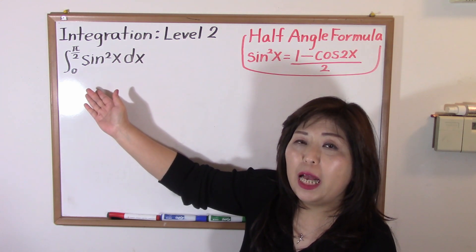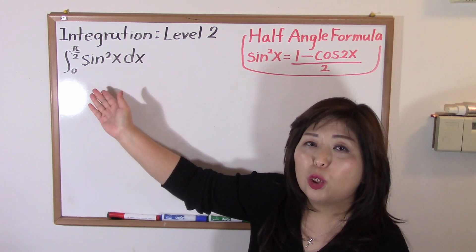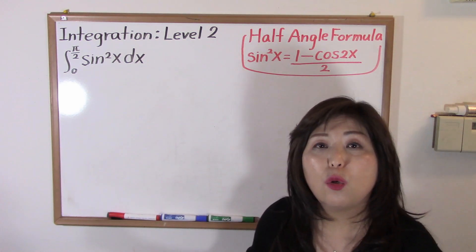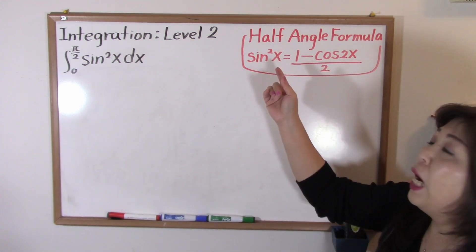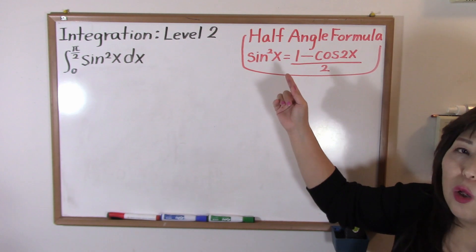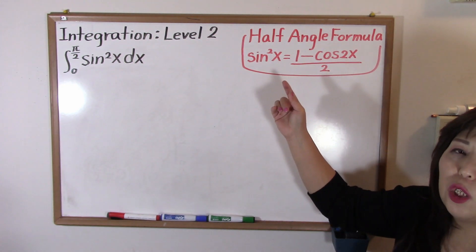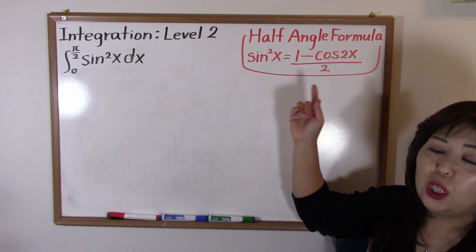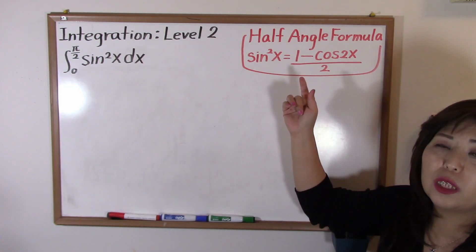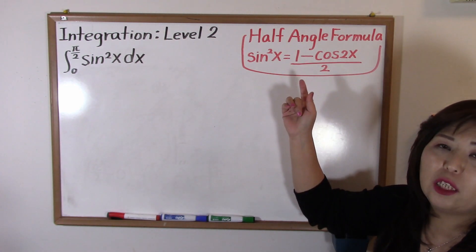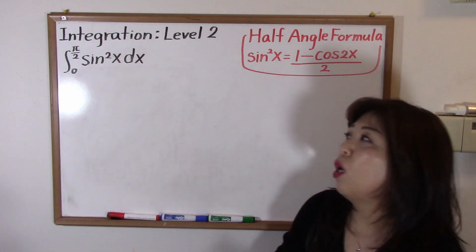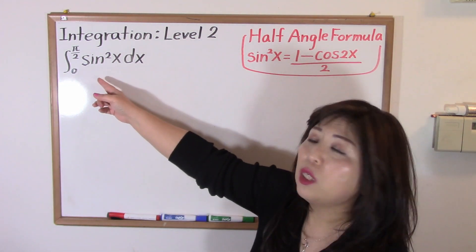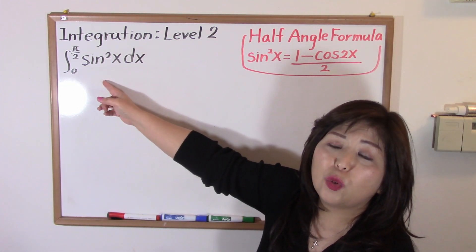Today's key point is that we are going to use the half-angle formula, which states that sine squared x is equal to one minus cosine two x, all over two. So first, we are going to substitute sine squared x with that expression.